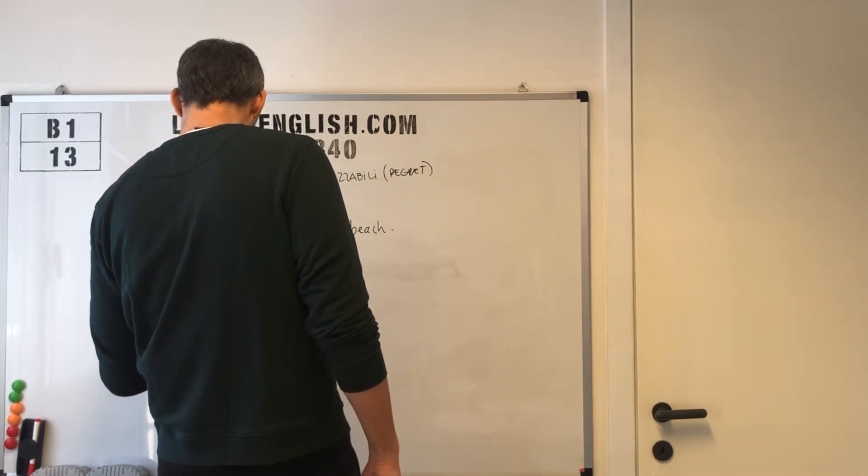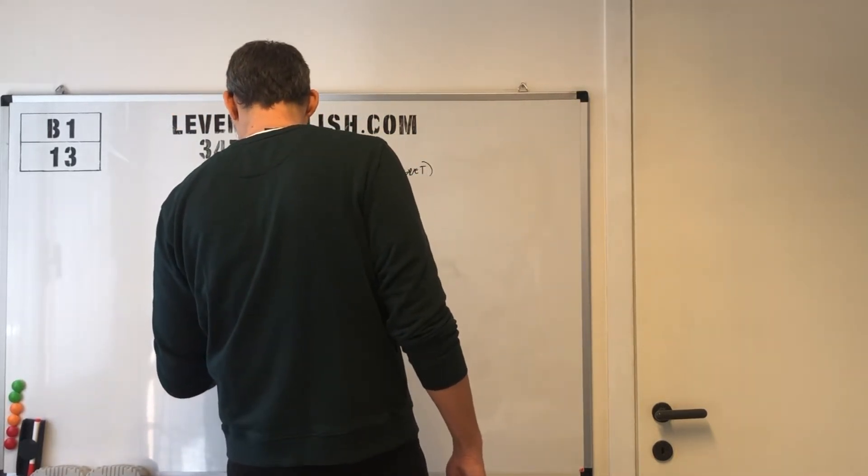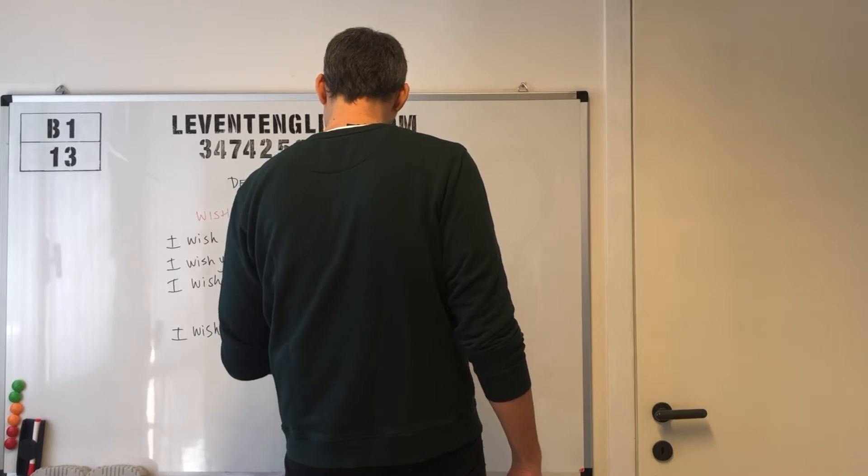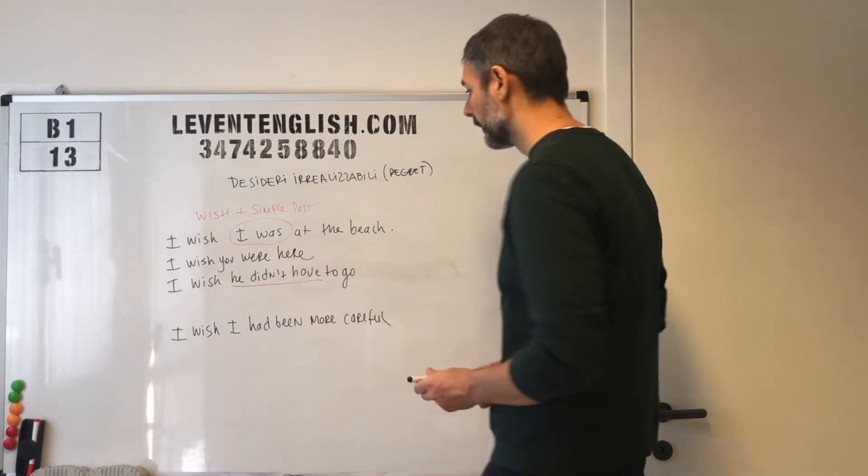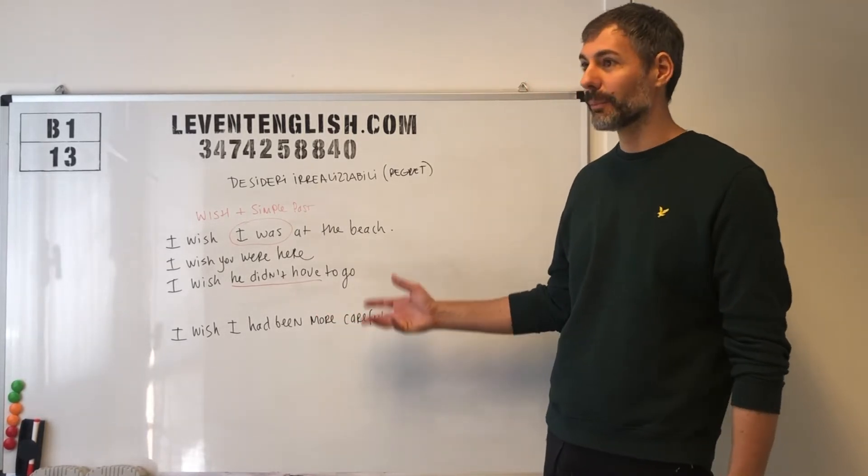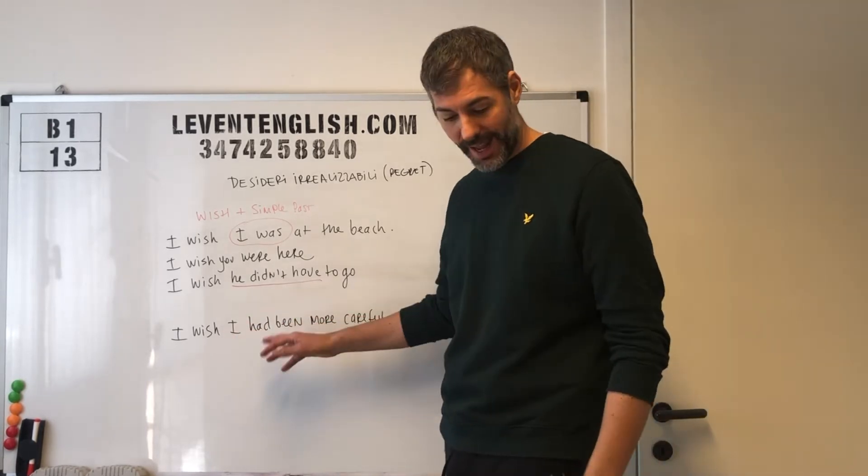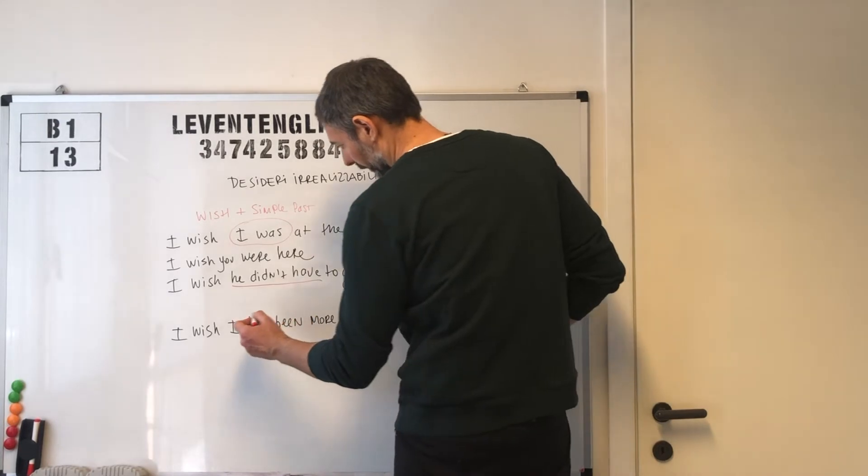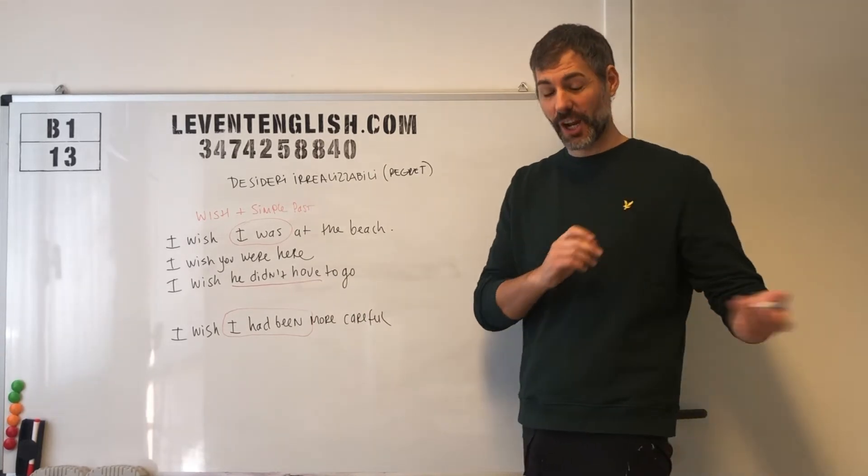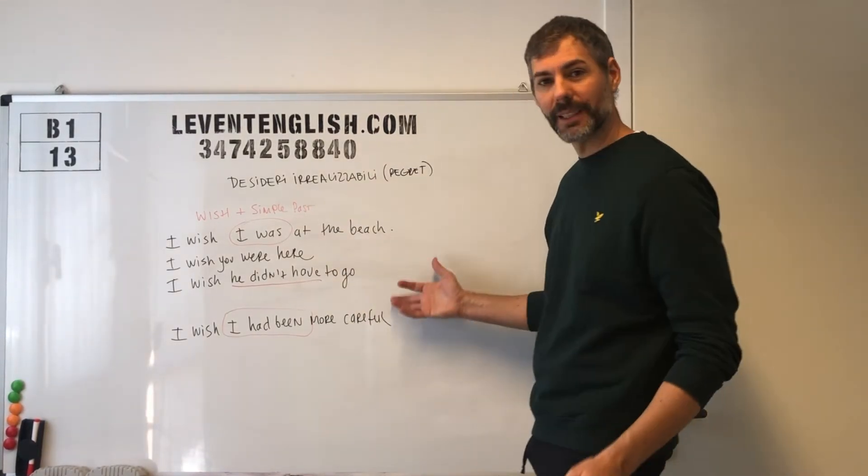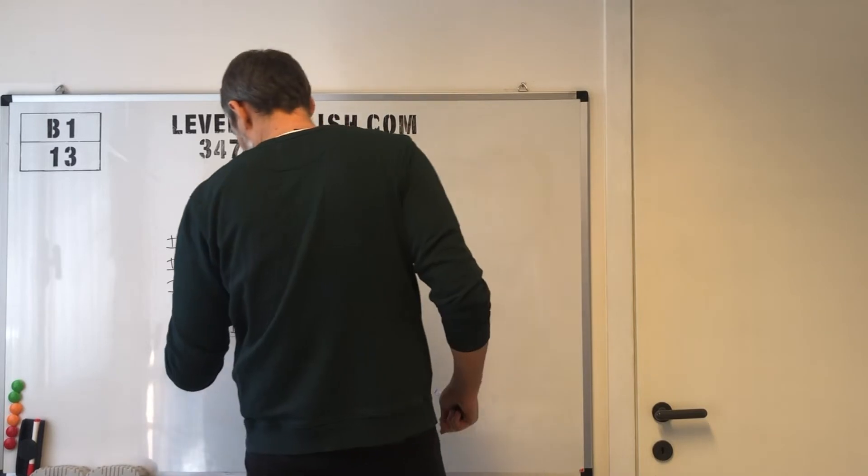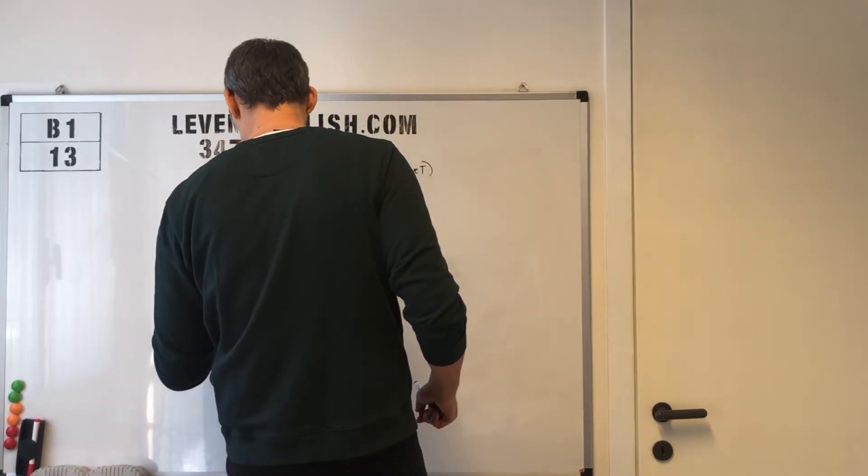Vediamo invece un esempio di wish con past perfect. I wish I had been more careful. Vorrei essere stato più attento, mi piacerebbe essere stato più attento, però non lo sono stato. I wish I had been more careful. In questo caso il desiderio irrealizzabile non è per qualcosa di presente, ma è per cambiare qualcosa che è già successo. In questo senso parlavo prima di rimorso. I wish I had been more careful. E in questo caso wish si usa insieme al past perfect.